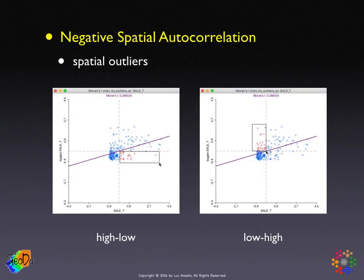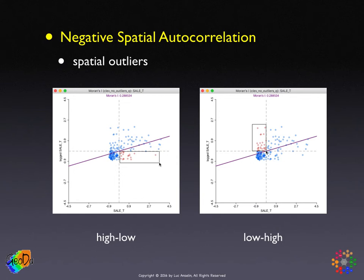The other side of the coin is negative spatial autocorrelation, or spatial outliers. High-low points have standardized values above the mean but neighbors below the mean. Low-high is the opposite: values below zero surrounded by neighbors above the mean. These locations are what we refer to as spatial outliers. There is no notion of statistical significance here yet — that is addressed when we look at local spatial autocorrelation.